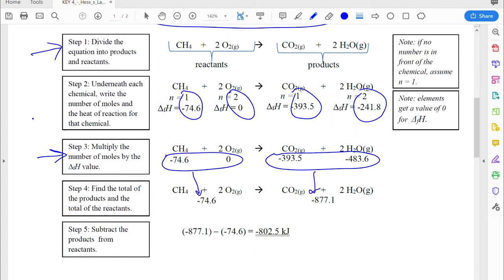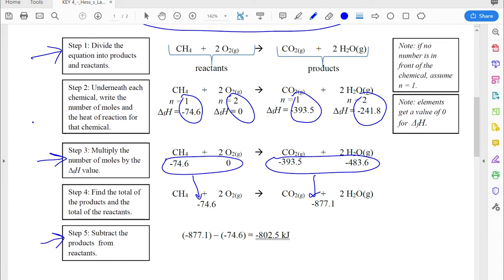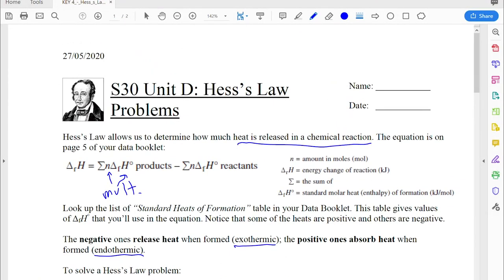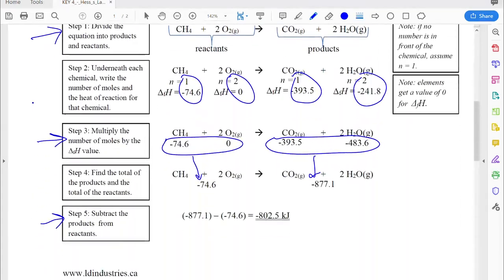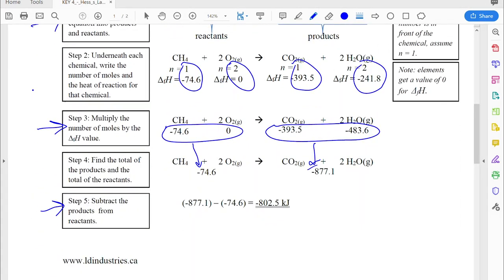And in the very last step, step 5, I have to subtract the products number from the reactants number. And again, you don't have to memorize to do that. The formula says take the products and subtract the reactants. So here's what I get when I take the products of negative 877.1 and subtract the reactants of negative 74.6. I get negative 802.5 kilojoules. That's how much energy would be released for that first reaction.